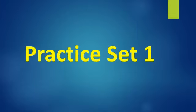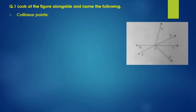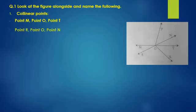Practice set 1. Question 1. Look at the figure alongside and name the following. First, collinear points. Point M, point O, point T. Point R, point O, point N.